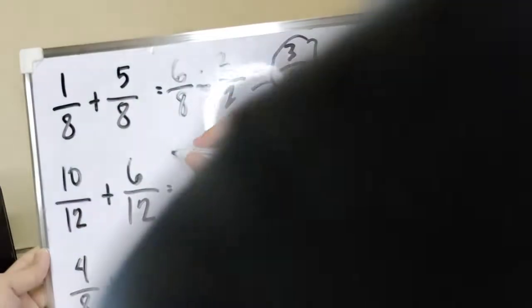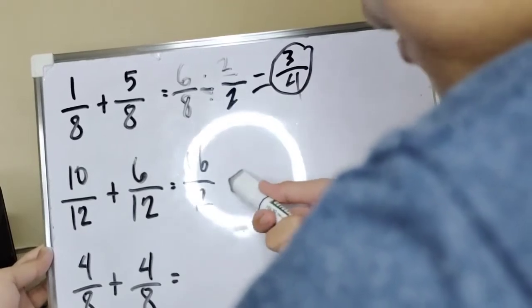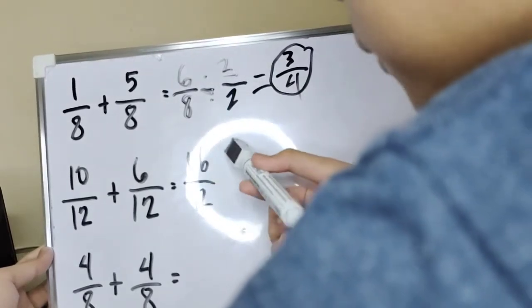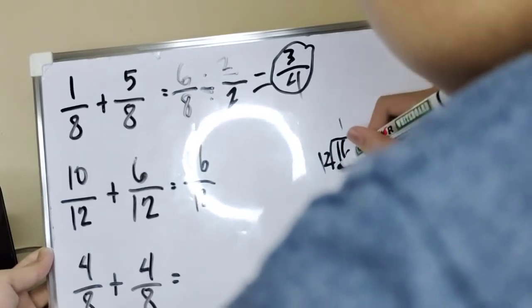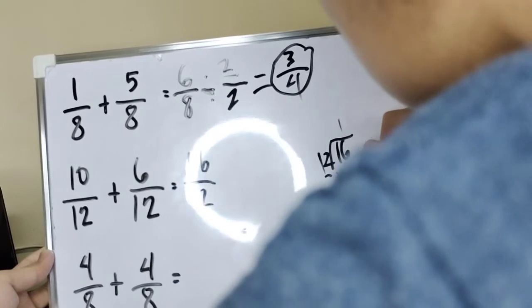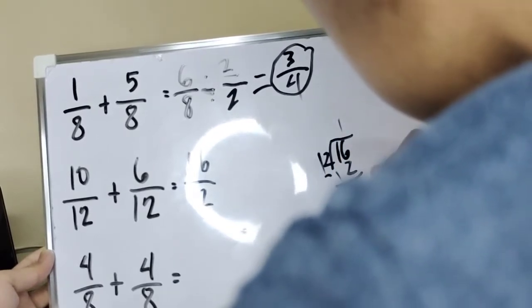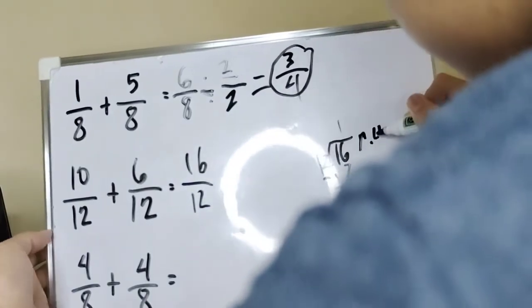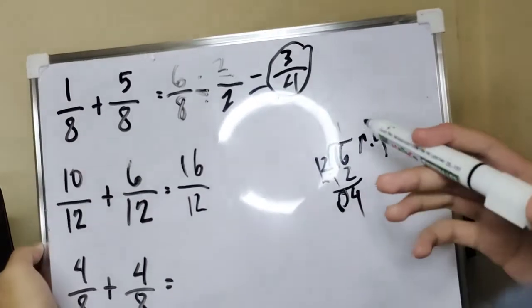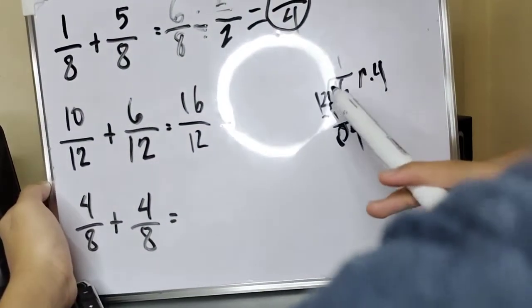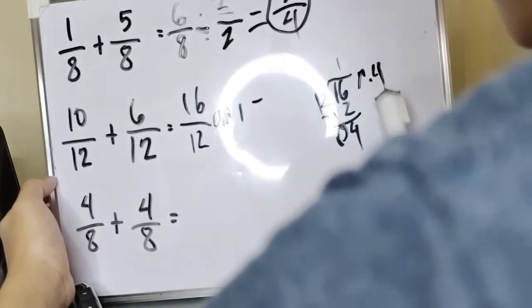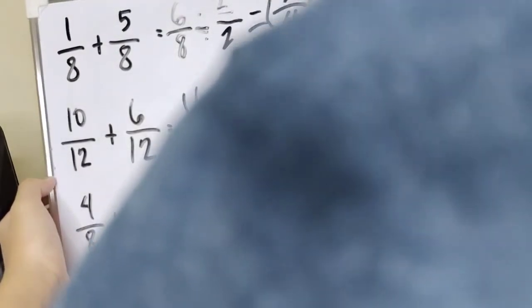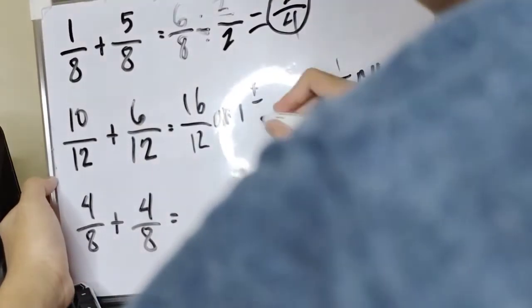Next number, kuya. 10 plus 6, 16. Kapag sobra, i-divide. Ipag improper. Kapag improper fraction, i-divide lang yung numerator sa denominator. Improper fraction means mas marami yung numbers sa taas kesa sa baba. Ayan na yan. Tapos, yung quotient, siya yung magiging whole number.